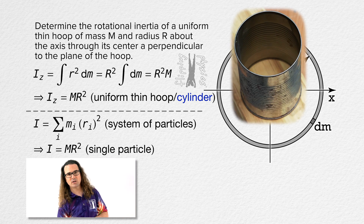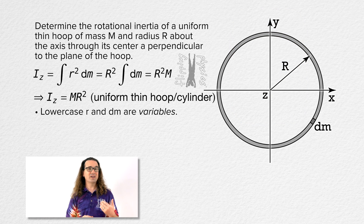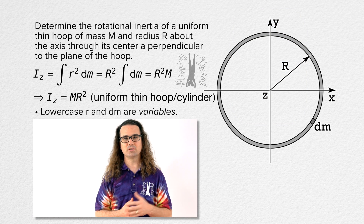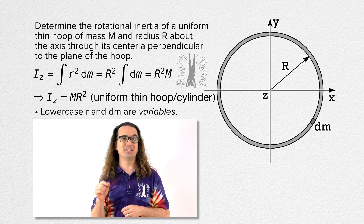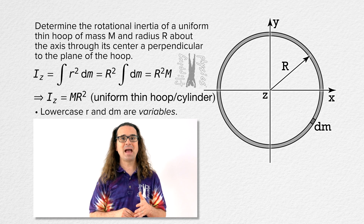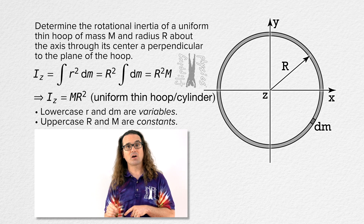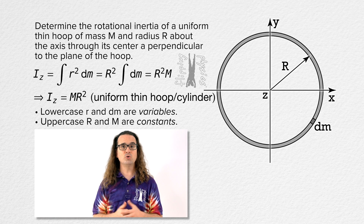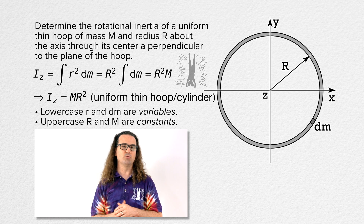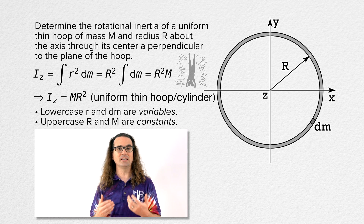Also, notice a subtle but important difference between the use of lowercase and uppercase letters. The lowercase r and dm refer to variables. Lowercase r is a variable distance between the axis of rotation and the location of dm. Lowercase dm is a mass which could be located anywhere on the hoop. Whereas uppercase R and uppercase M refer to constants: capital R is the constant radius of the hoop, and capital M is the total mass of the hoop. This idea of lowercase letters referring to variables and uppercase letters referring to constants is one which we will continue to see in physics.